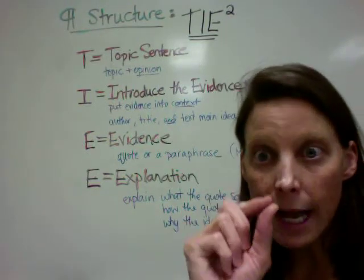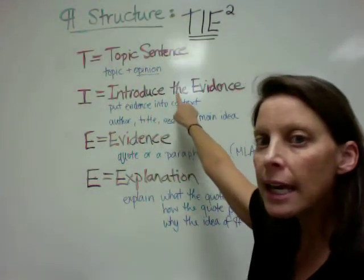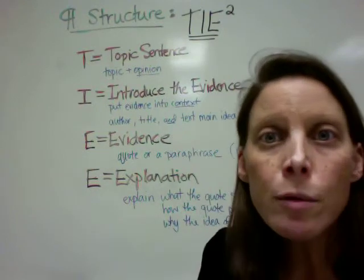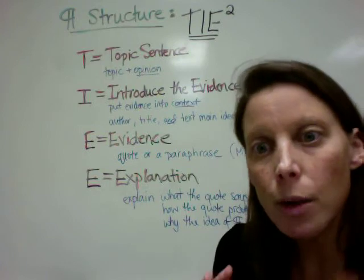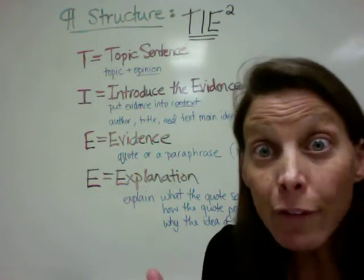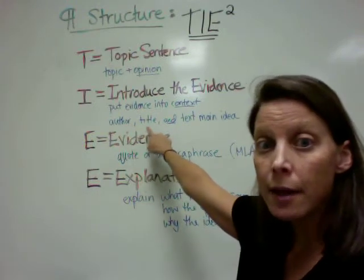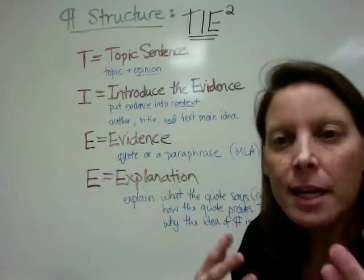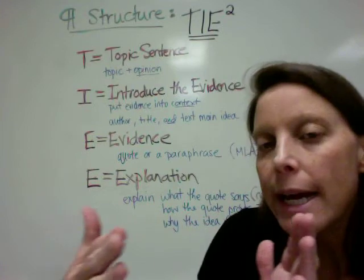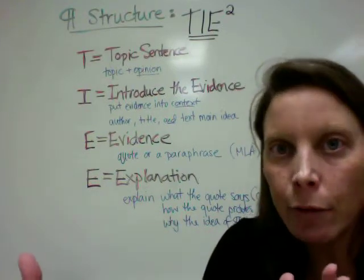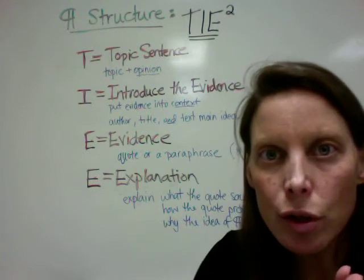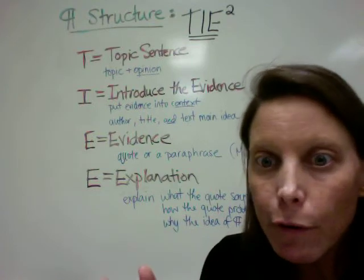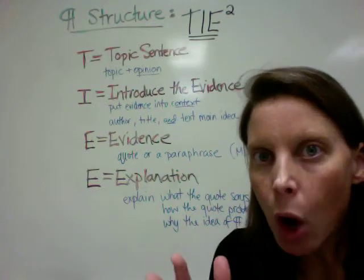Once you've set that topic sentence, you now move on to introducing the evidence. All evidence must be put into context. Do not assume that I have read John Steinbeck's The Chrysanthemums. You have to give me enough information so that I don't have to read the story. You need to give me the author's name, the title, and the text's summary. Give me enough information so that whatever you're about to quote is put into context. So if you're going to be quoting the end of the short story, then you need to tell me what has happened in the short story briefly, maybe three or four sentences, so that I understand what is going on.